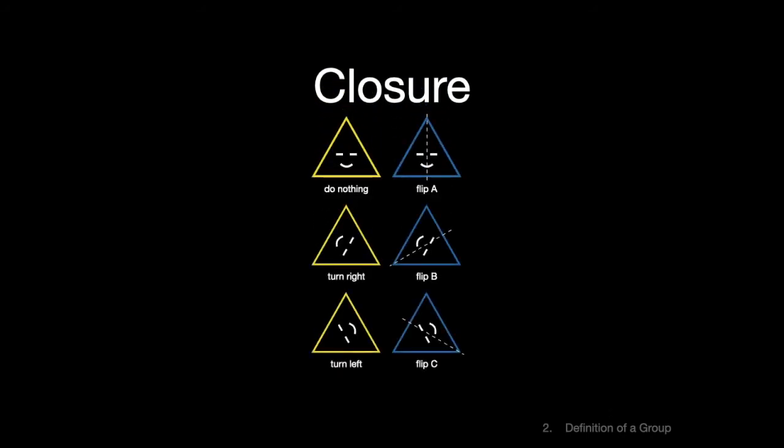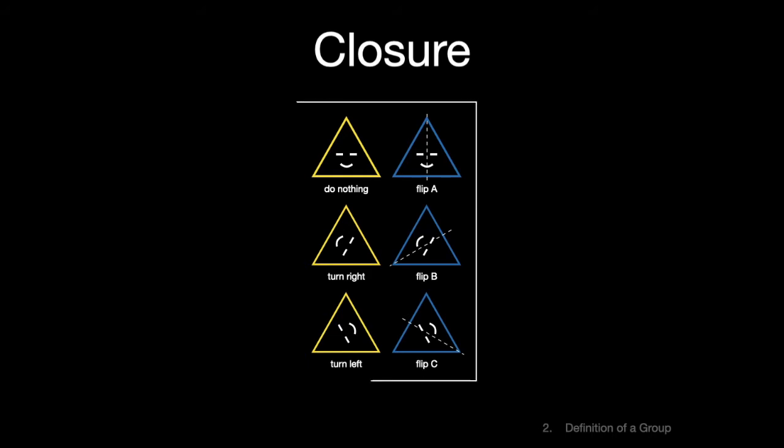Closure is the first necessary property of a group. It means what happens in the group stays in the group. In the case of our group of symmetries of a triangle, composing any two symmetries makes a symmetry. So we say the set of elements of the group is closed under composition.